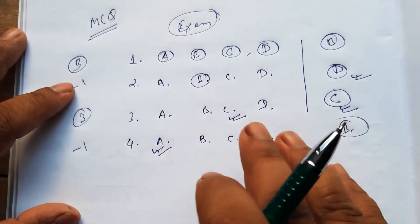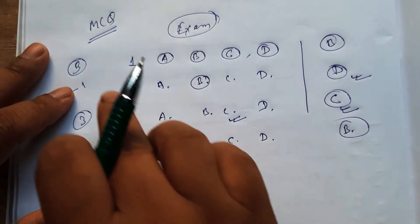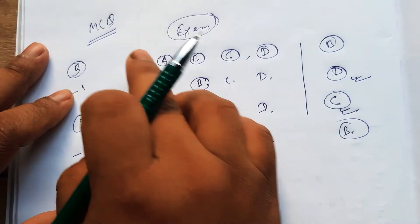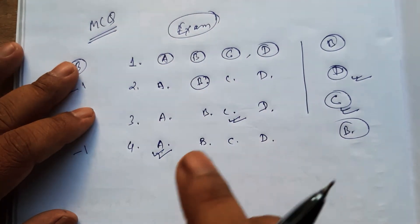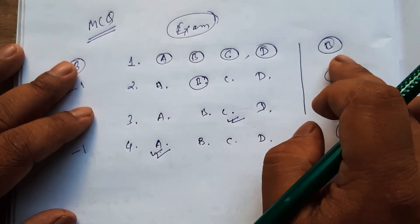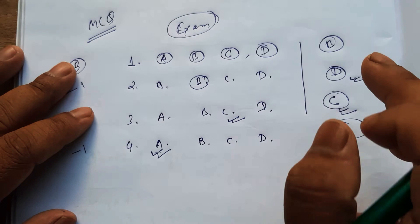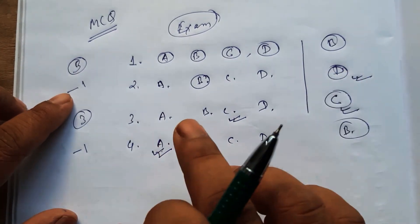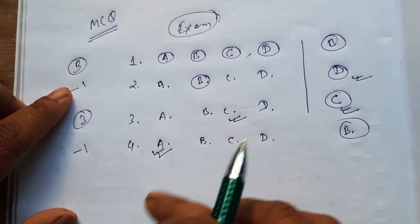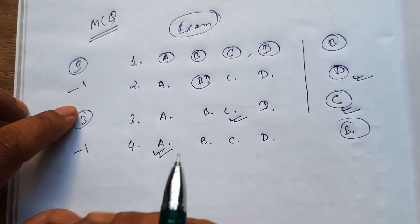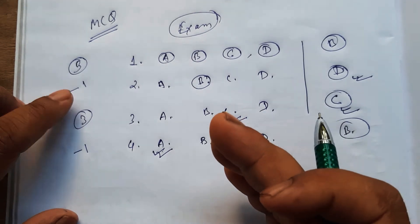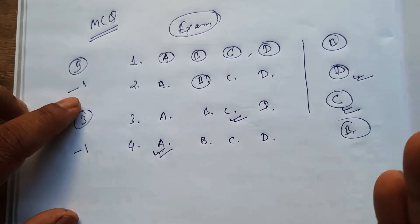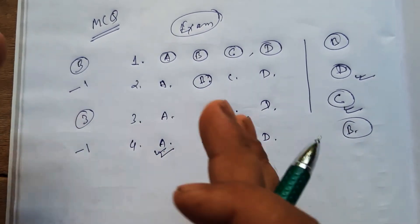Simply, if you have an exam with multiple questions and you answer correctly you are guaranteed marks. If you get one minus or two minus deducted for wrong answers, that is the guarantee of negative marking in competitive exams.